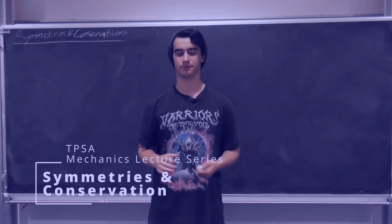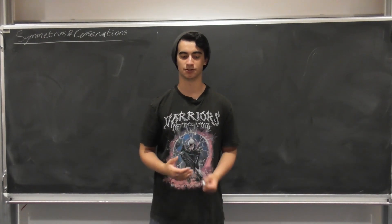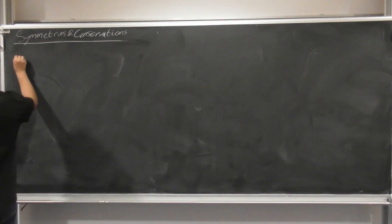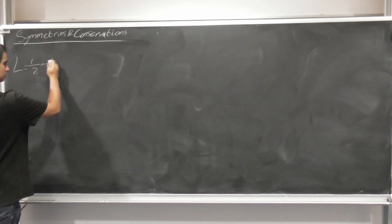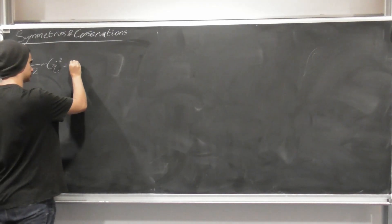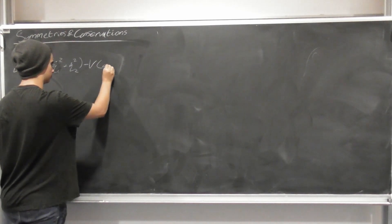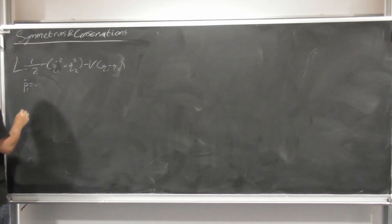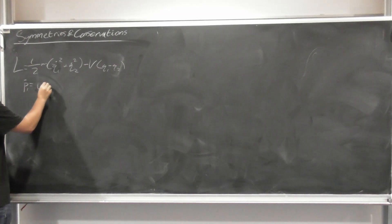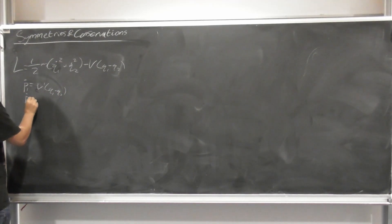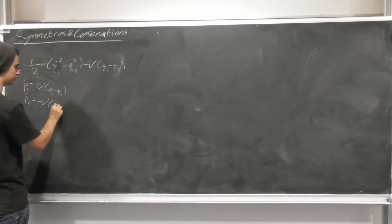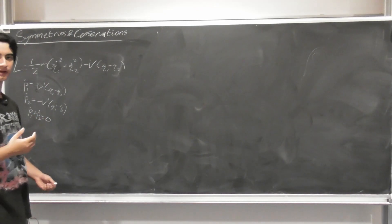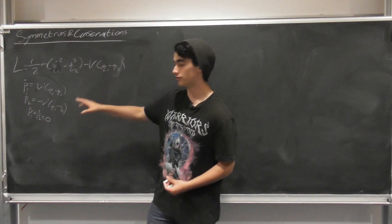This will be our last section all about symmetries. We'll start off talking about symmetries and conservation. From a previous lecture, we had the Lagrangian L = ½M(q̇1² + q̇2²) - V(q1 - q2). The equations of motion give ṗ1 = V'(q1-q2) and ṗ2 = -V'(q1-q2). Summing these, ṗ1 + ṗ2 = 0, so the total momentum of the system doesn't change with time.